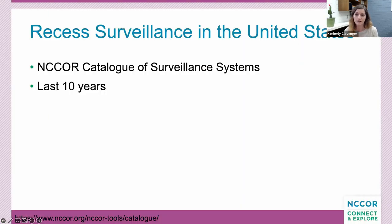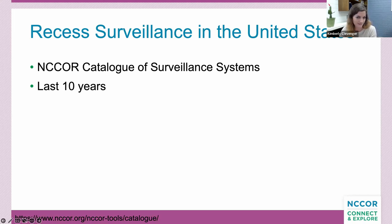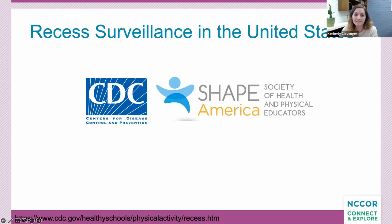The project I'm discussing looked at all nationally representative surveillance data on recess in the United States over the last decade. We identified surveillance systems using NCORE's catalog — a useful tool for finding data of all types — and we wanted to look beyond just recess provision to see how we were doing with a variety of recommendations set forth by the Centers for Disease Control and Shape America. These two organizations have developed eight recess recommendations.